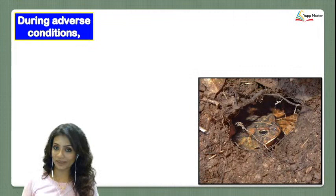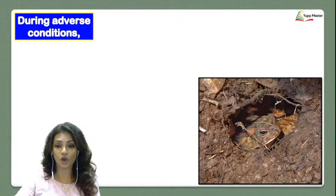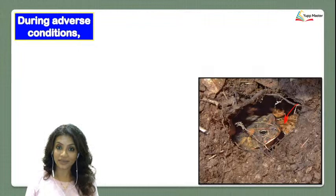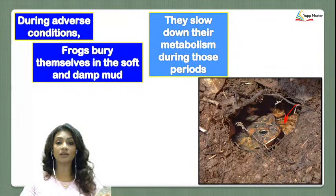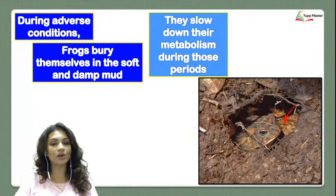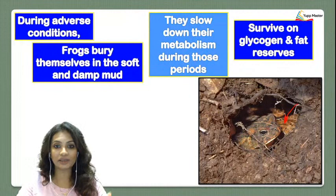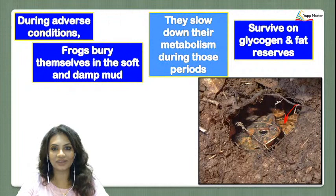During adverse conditions — extremes of summer or winter — frogs hide themselves. They bury themselves in soft and damp mud, slowing down their metabolism during this period. Metabolism doesn't stop; metabolic activities go on very slowly. Since they're not coming out on land and not catching food, they survive on glycogen and fat reserves built up during the period when they were outside.